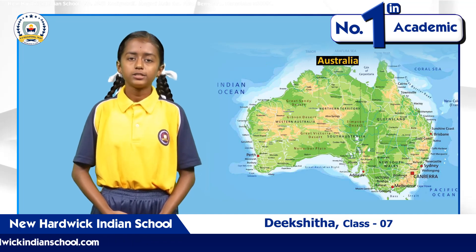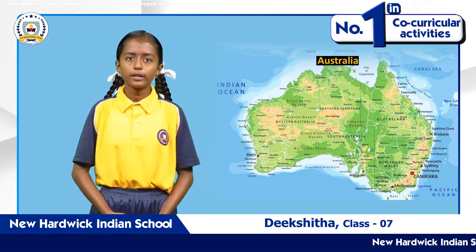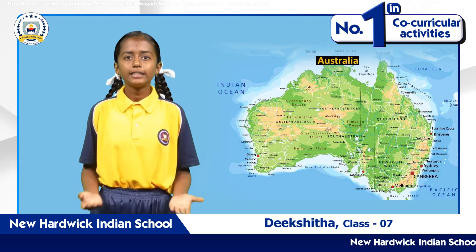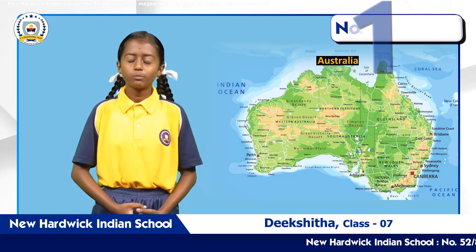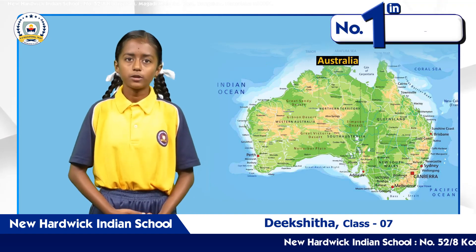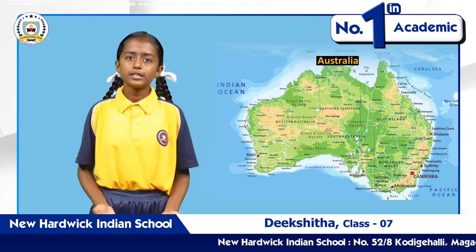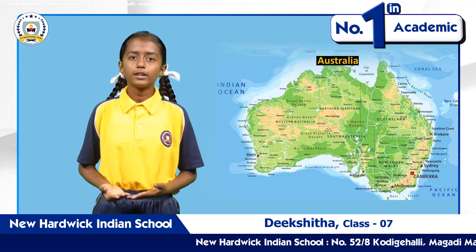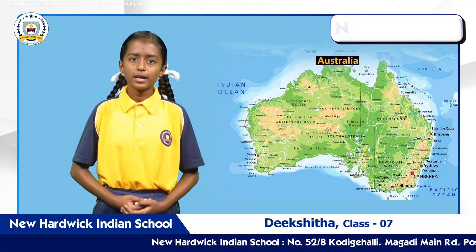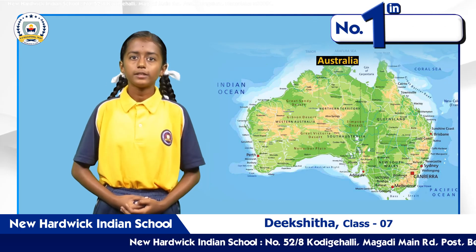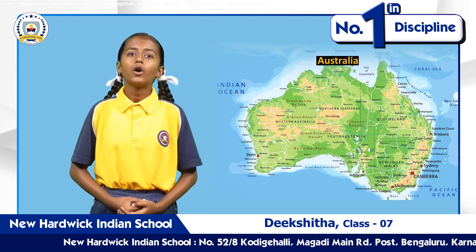The continent of Australia is located between the Indian Ocean and the Pacific Ocean. It is bordered by the Timor Sea and Arafura Sea in the northwest, Torres Strait and Coral Sea in the northeast, Tasman Sea in the southeast, and the Great Australian Bight in the south.